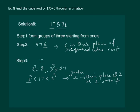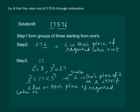And hence, according to step 3, 2 lies in the 10th place of required cube root. That means, that cube root of 17,576 is equal to 26.